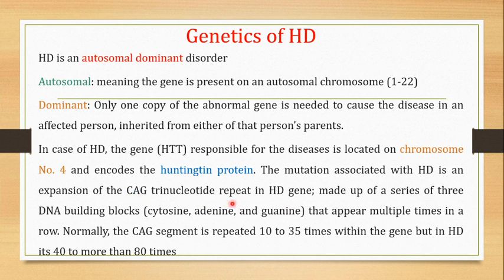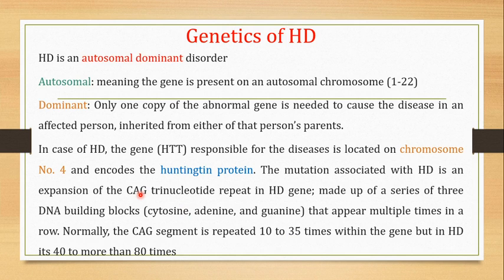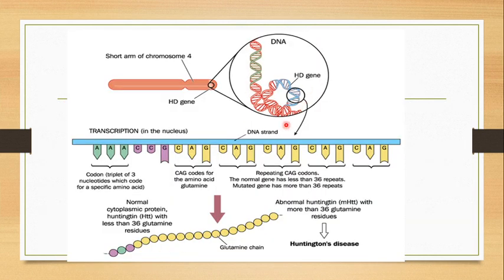The mutation in HD is the expansion of a CAG trinucleotide repeat in the HTT gene. A trinucleotide is made up of three nucleotides — C, A, and G — meaning this repeat consists of cytosine, adenine, and guanine. The HTT gene is located on the short arm of chromosome 4. In a normal HTT gene, the CAG trinucleotide is repeated about 10 to 35 times, but in HD it is repeated more than 40 to over 80 times.